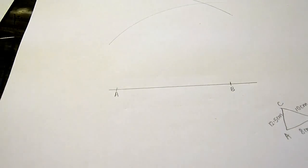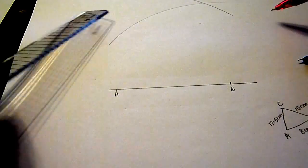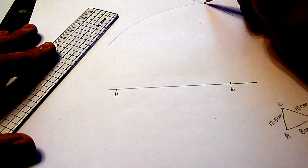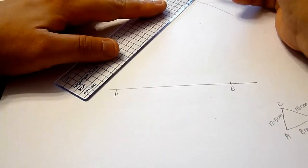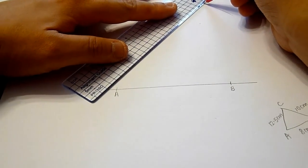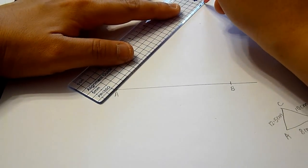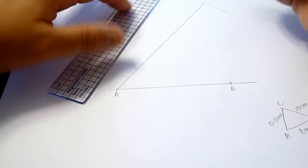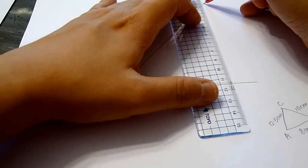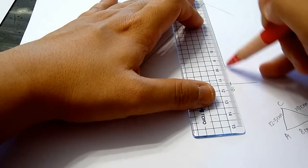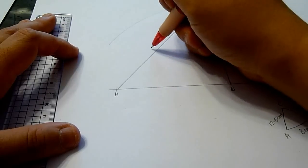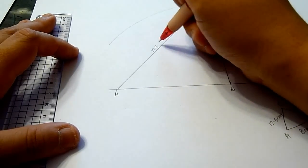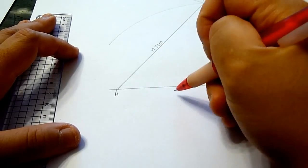Now, the arc that measures 12.5 cm will intersect the previous arc at this point. By joining the points together, we get the triangle ABC, and we have to label the sides with the measurement given.